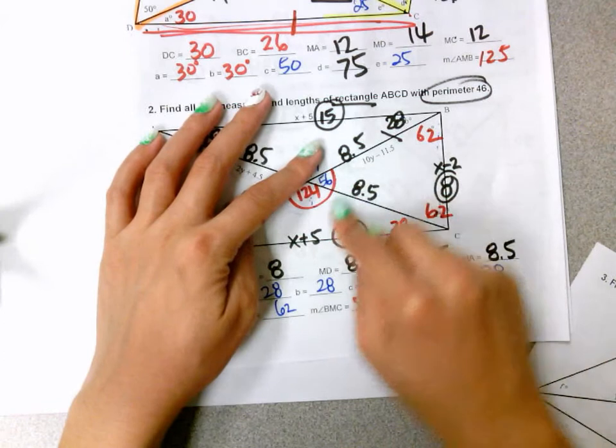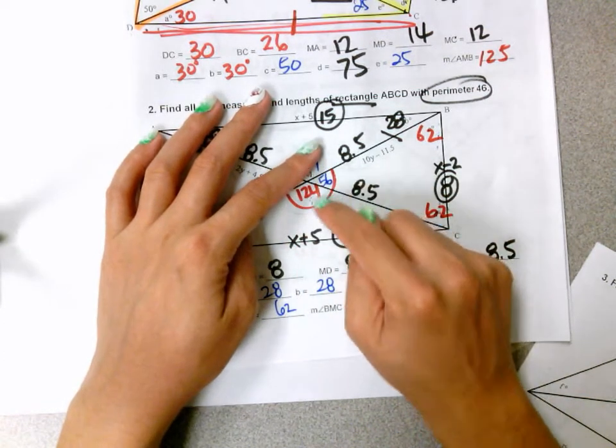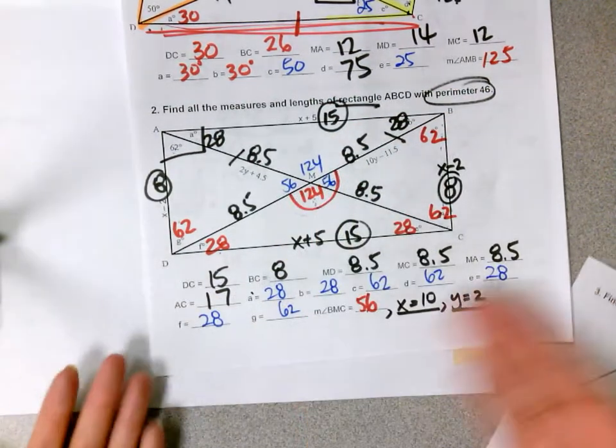Once you get 56, you take the 180, 180 minus 56 is 124, which is also the same right here, and then these are the same, and then you just write your answers in. Okay, so now next.